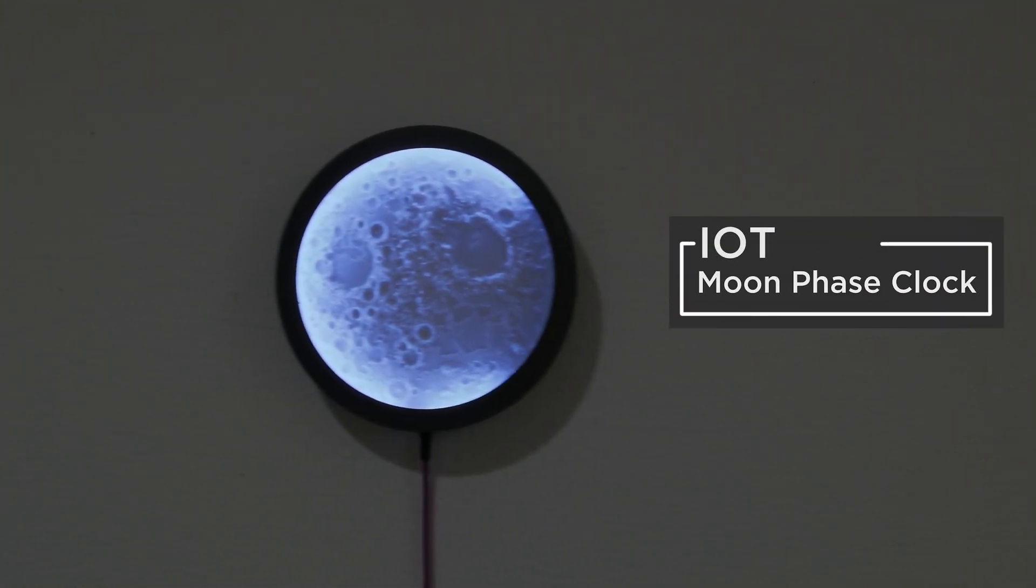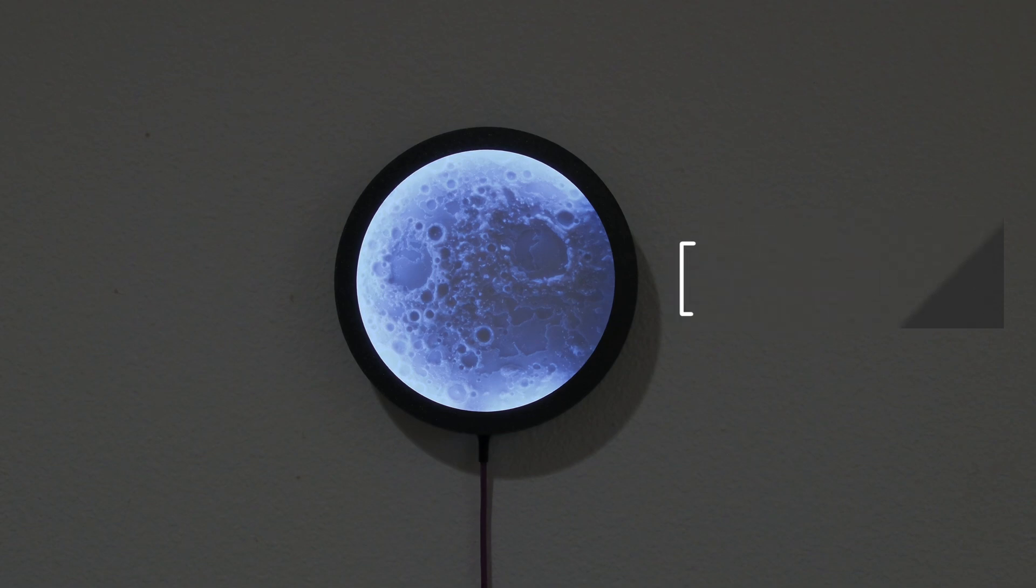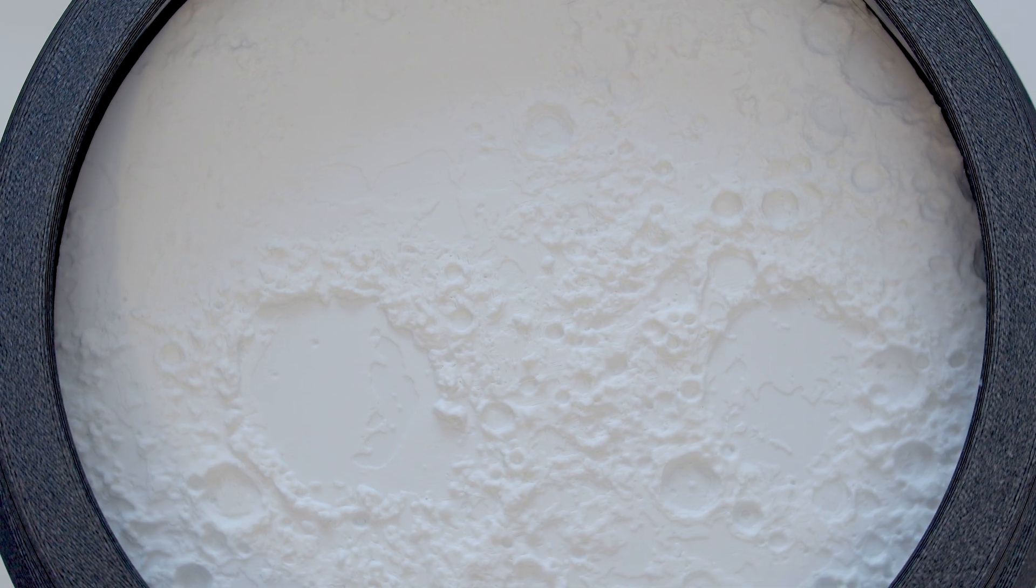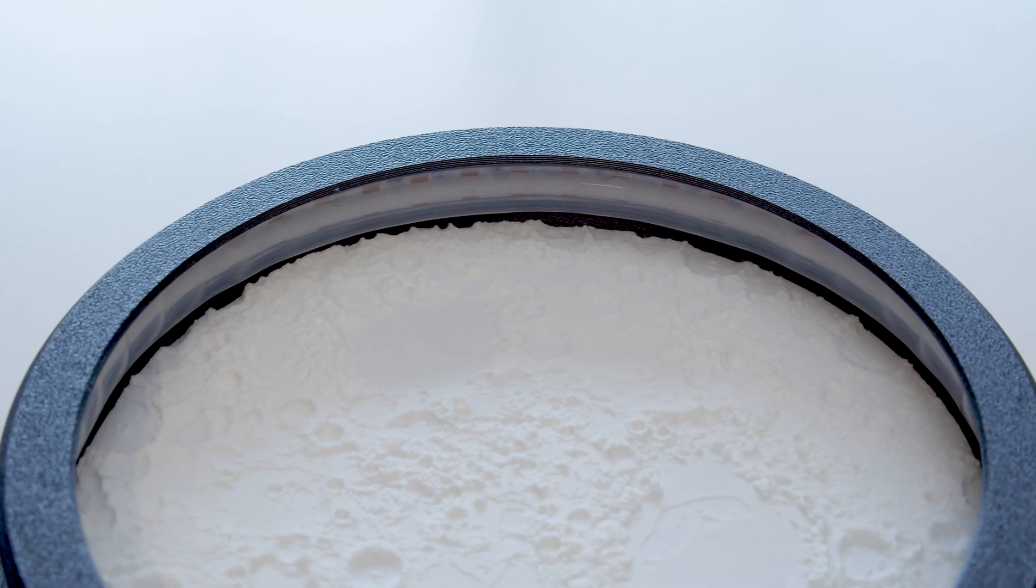You can build an LED moon lamp that displays the phases of the moon. This IoT lamp features a 3D printed model that has craters and textures from the surface of the moon.